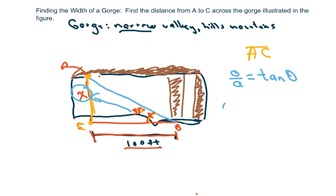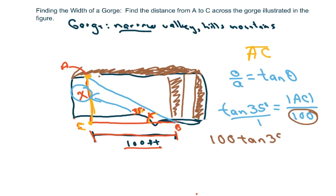I'm going to write tan of 35 degrees equals the length of AC, or you can call it x, over 100 feet. Okay, and then you're just going to cross the 100 up here. So it's going to be 100 tan of 35 degrees equals your length of AC.